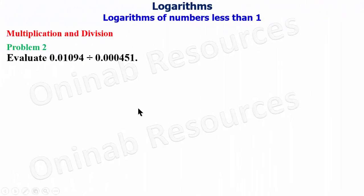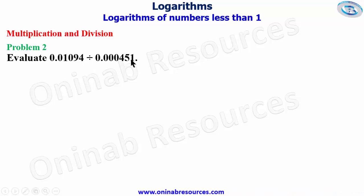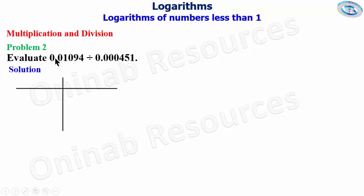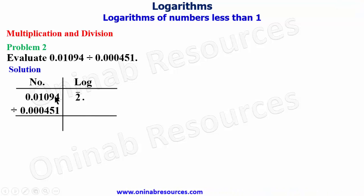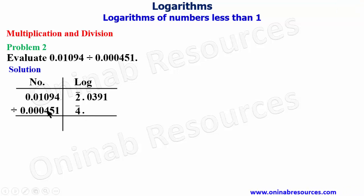Problem two: evaluate 0.01094 divided by 0.0000451. We arrange the work in tabular form with number and log columns. The integer part of 0.01094 is bar two. From the logarithm table, .10 under 9, difference 4, gives 0391. The integer part of 0.0000451 is bar four. The logarithm of .45 under 1 with no difference gives 6542.